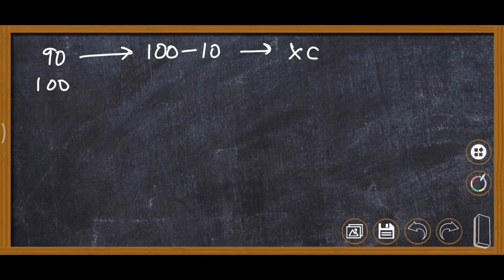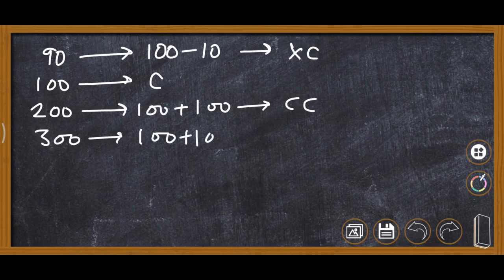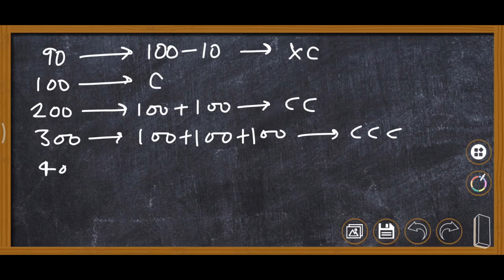The symbol for 100 is C. For 200, it is 100 plus 100, written as CC. For 300, it is CCC. For 400, we cannot write C four times, so we write it as 500 minus 100, which gives CD.